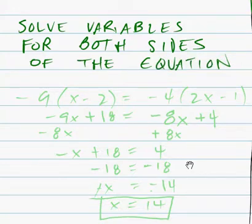Alright, now we'll do a simple one here. -9(x-2) equals -4(2x-1).